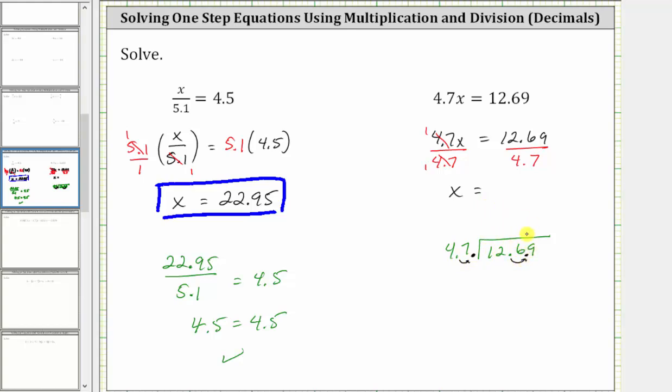And now we move the decimal point up into the quotient and divide like we normally do. We begin by determining how many 47s in 129, which is two. And I multiply two times the divisor. Two times 47 is 94. And we subtract. Six minus four is two. 12 minus nine is three. Bring down the nine.